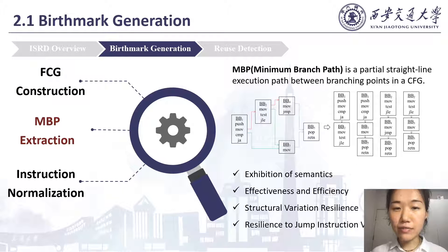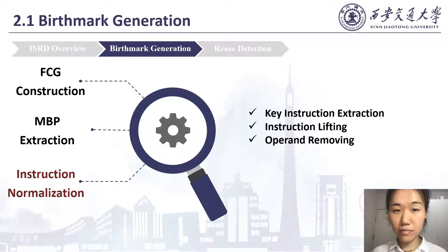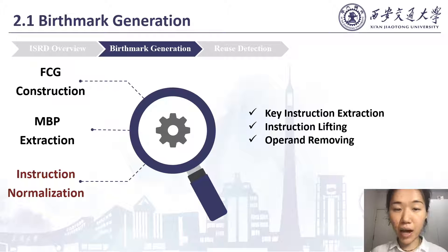To characterize function semantics, we propose the minimum branch path (MBP), which is a partial straight-line execution path between branching nodes in a control flow graph. MBP can represent function semantics with effectiveness and efficiency. In addition, it is resilient to structural variations and jump instruction variations. To retain the call semantics of the instructions and be resilient to obfuscation introduced by cross-compilation, normalization over instructions is applied. It consists of three parts: key instruction extraction, instruction lifting, and operand removing.